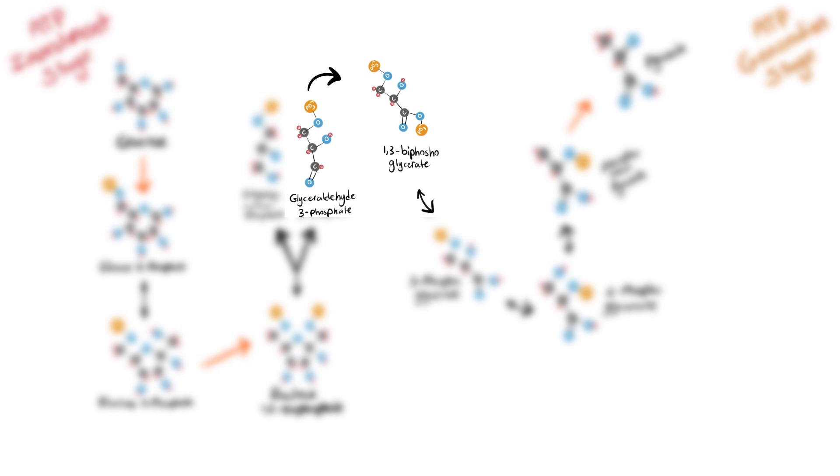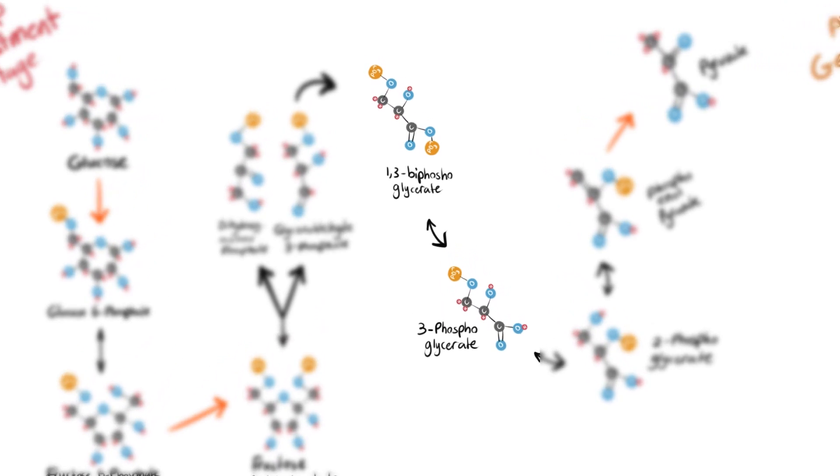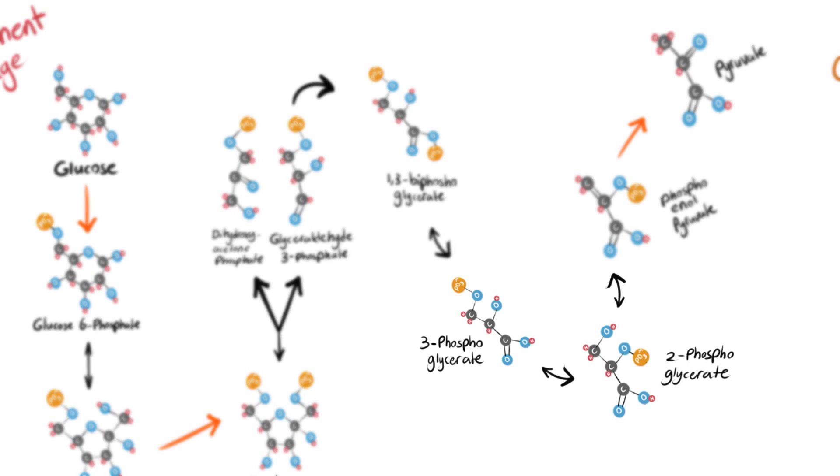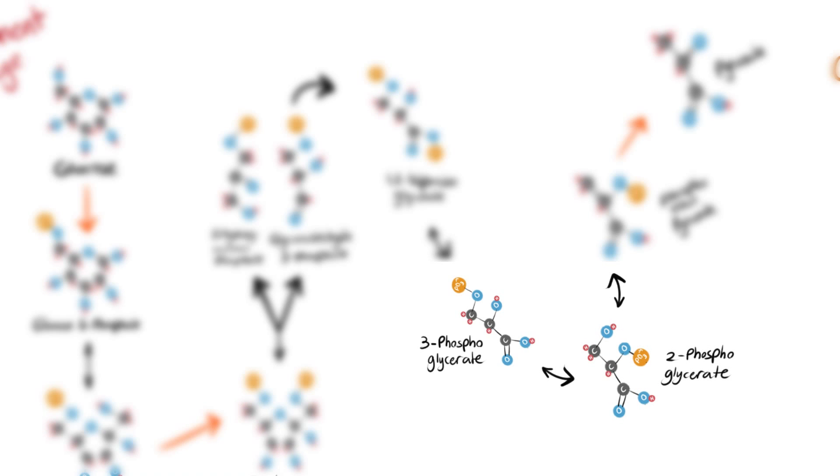The next step involves the oxidation of glyceraldehyde 3-phosphate and reduction of NAD+ into NADH, producing two NADH molecules and two molecules of 1,3-bisphosphoglycerate. Each 1,3-bisphosphoglycerate molecule is then dephosphorylated, yielding an ATP molecule and a 3-phosphoglycerate molecule. Afterwards, each molecule of 3-phosphoglycerate will be converted into a 2-phosphoglycerate molecule by changing the position of the phosphate group.